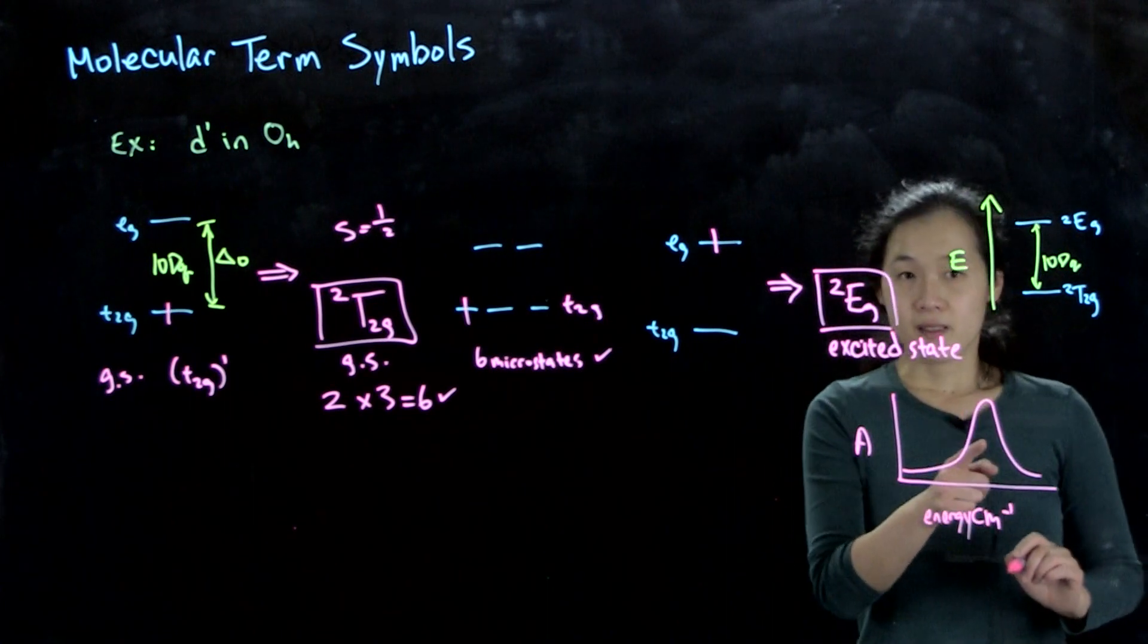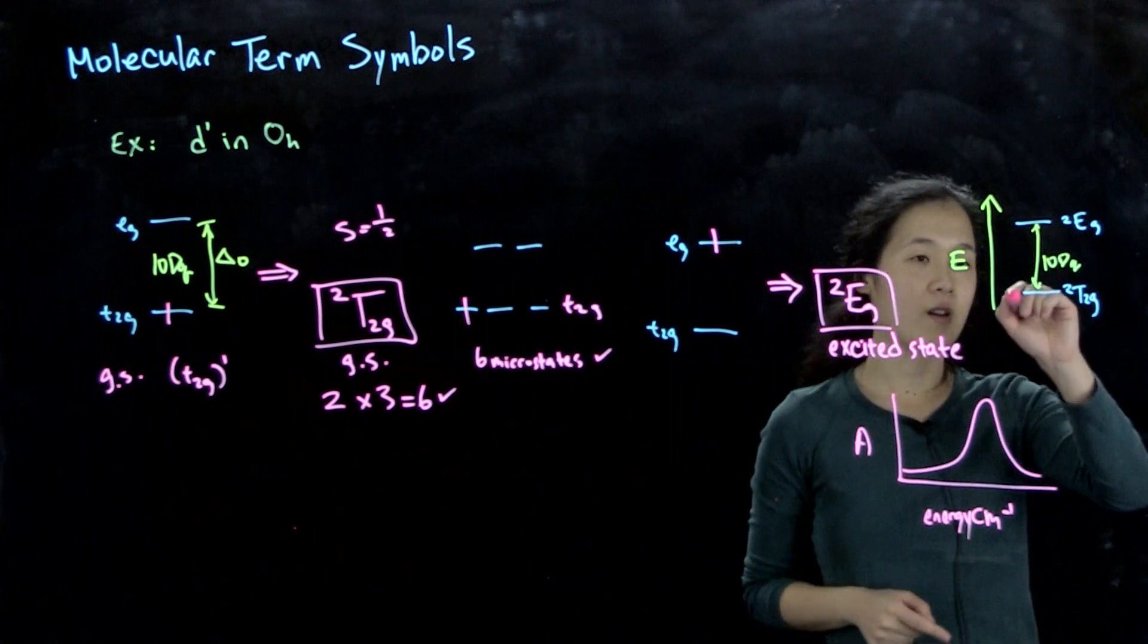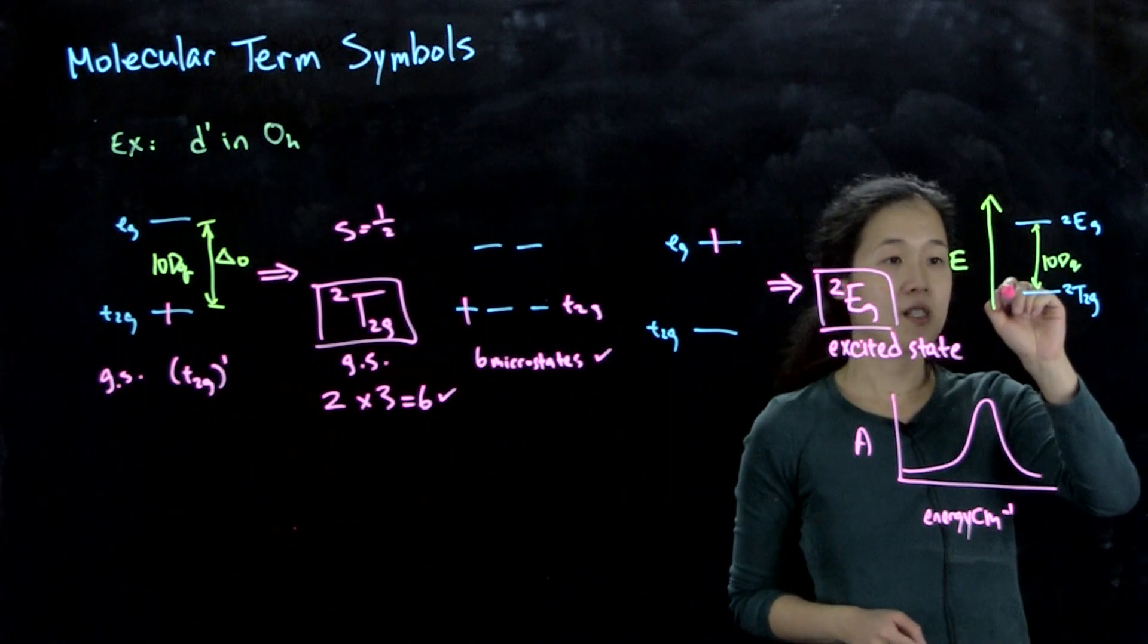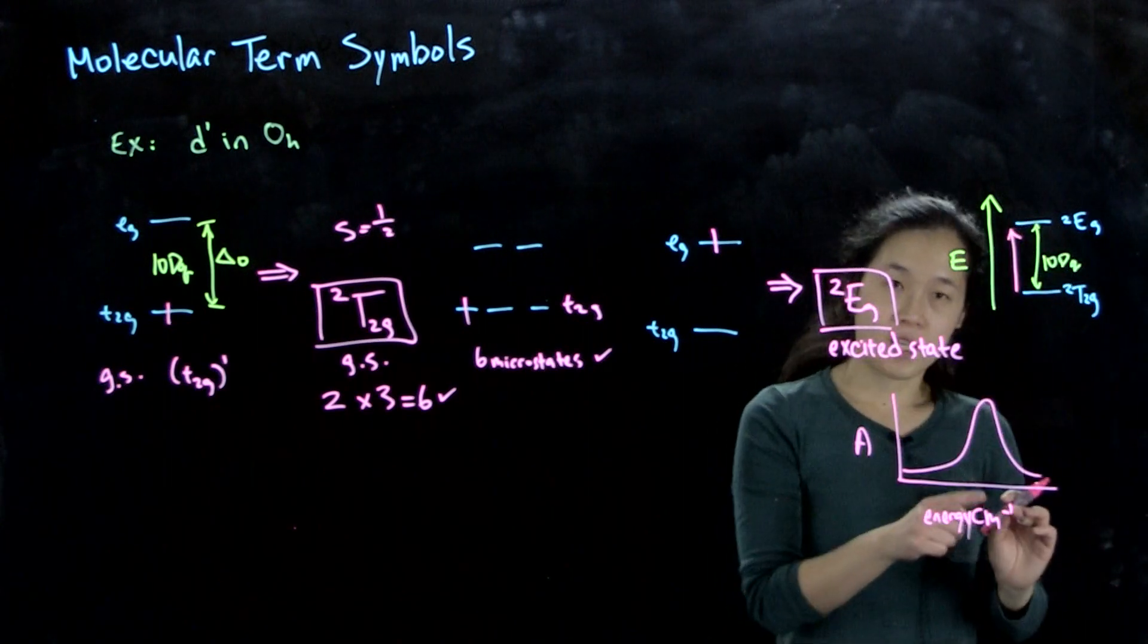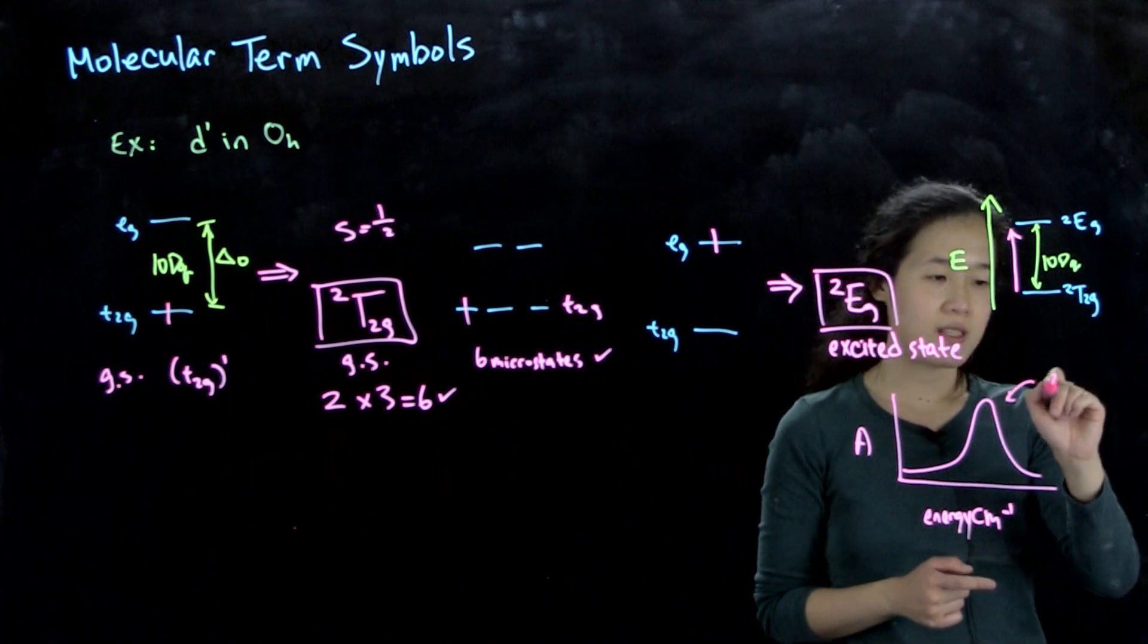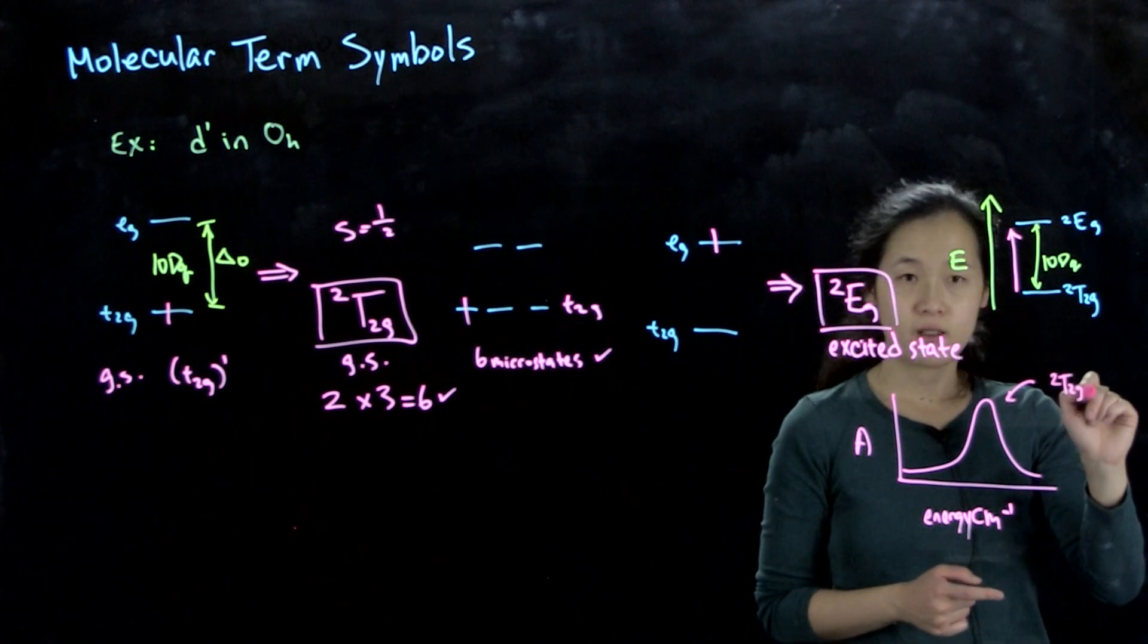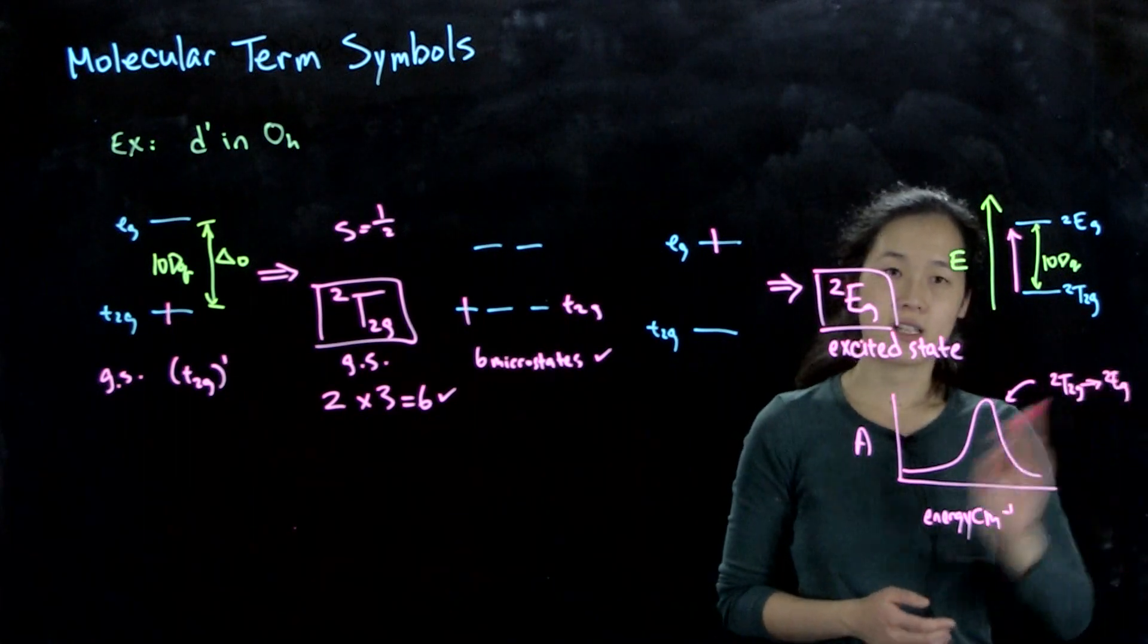So this absorbance in the UV-Vis spectrum corresponds to an excitation going from this ground state of the t2g to the excited state. And that, this energy corresponds to our 10Dq, our ΔO. So this transition you could refer to as an excitation, doublet t2g going to doublet eg. So ground state to excited state.